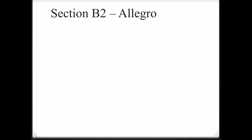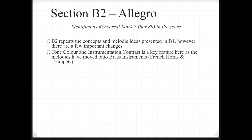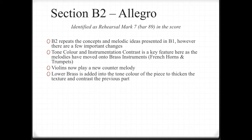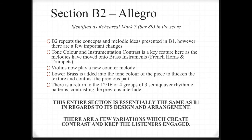Section B2 — the Allegro, Part 2. It's identified as rehearsal mark 7 or bar 89 in the score. B2 repeats the concepts and melodic ideas presented in B1. However, there are a few important changes. Tone colour and instrumentation contrast is a key feature, as the melodies have moved into brass instruments — French horns and trumpets. Violins now play a new counter melody. Lower brass is added to thicken the texture, but there is a return to the 12/16, or four groups of three semiquaver rhythmic patterns. This entire section is essentially the same as B1 in regards to its design and arrangement, with a few variations to create contrast and keep the listener engaged.